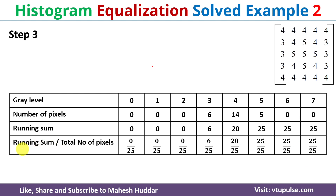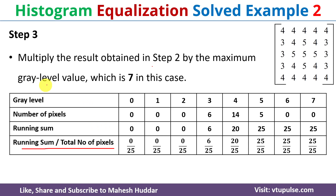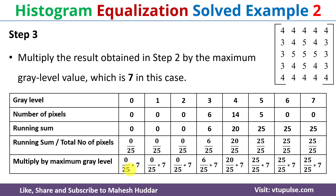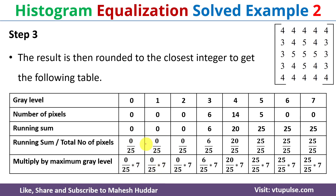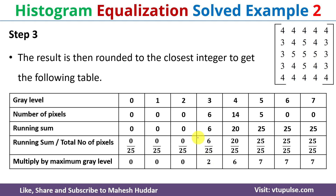Once we find the running sum divided by the total number of pixels, the next step is to multiply that result by the maximum gray level value, which is 7 in this case. For example, (0/25)×7, (0/25)×7, and so on. The result is then rounded to the closest integer. For gray levels 0, 1, and 2 we get 0; for gray level 3 we get 6×7/25 = 1.68, which rounds to 2.